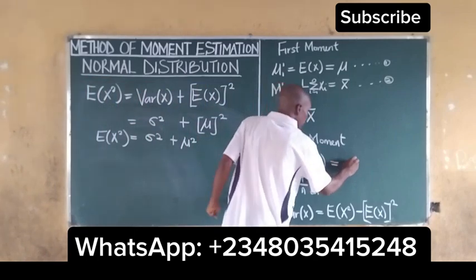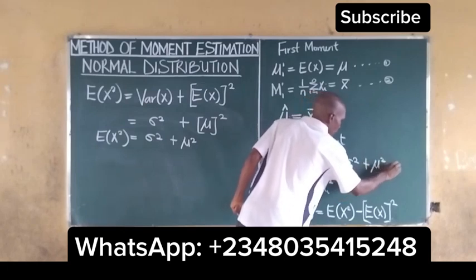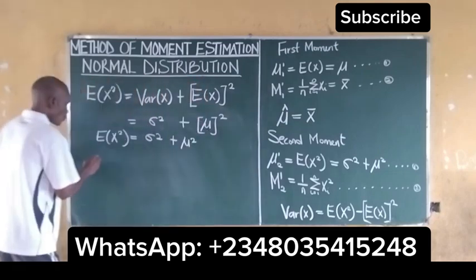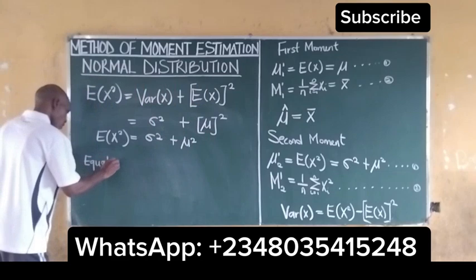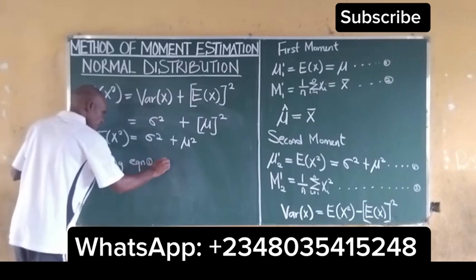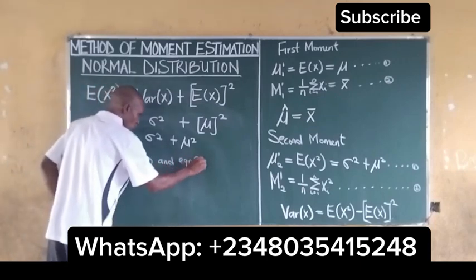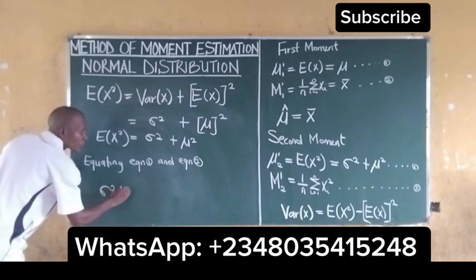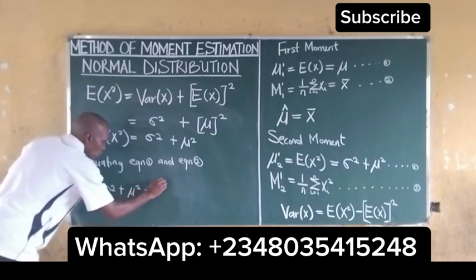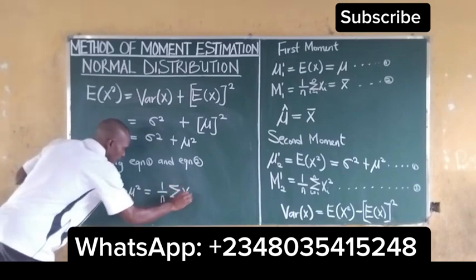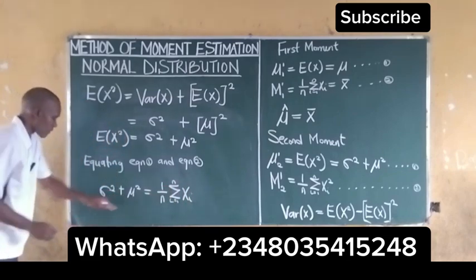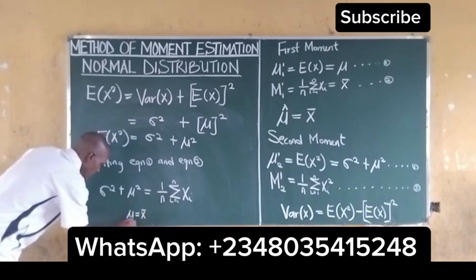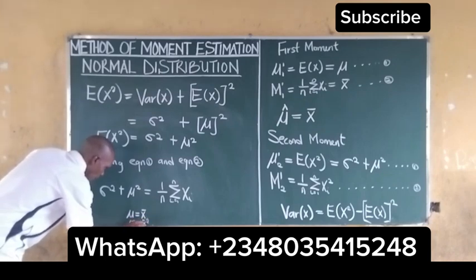We take sigma squared plus mu squared as equation 1, and the sample version (1/n) summation of x_i squared as equation 2. For the second moment, equating equation 1 and equation 2, we get: sigma squared + mu squared = (1/n) summation of x_i squared, from i = 1 to n. We should note that if mu = x̄, then mu squared = x̄ squared.